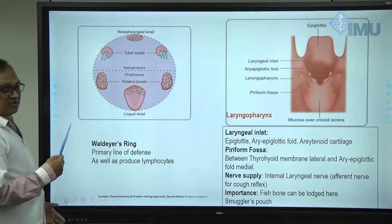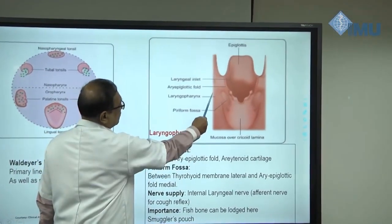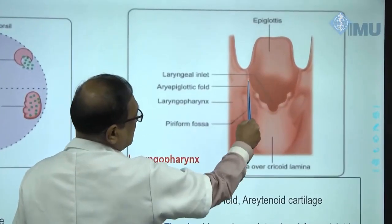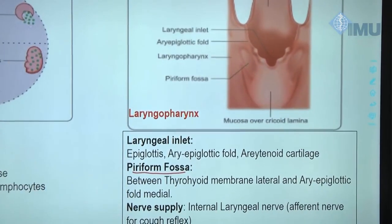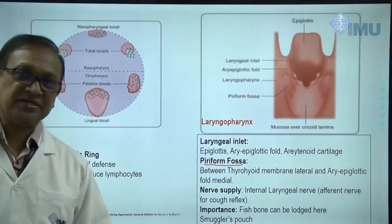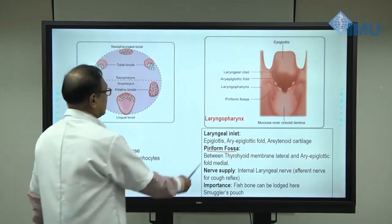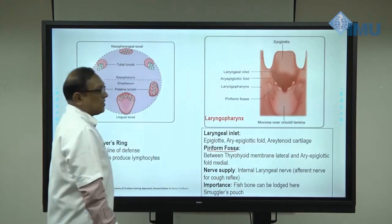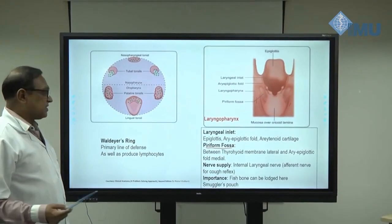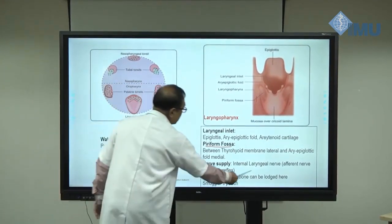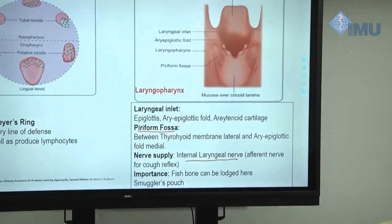On each side of the laryngopharynx, on the lateral aspect, there is a fossa called the piriform fossa. This is clinically important: when a fish bone gets stuck, it typically gets stuck here in the piriform fossa, which provides space on the lateral aspect of the laryngopharynx. When a fish bone is stuck there, it is painful because this area is richly innervated by the internal laryngeal nerve, which can also initiate a cough reflex. The piriform fossa is a very important component of the laryngopharynx.